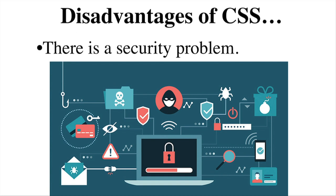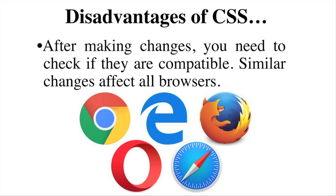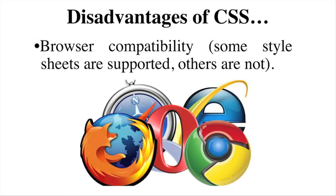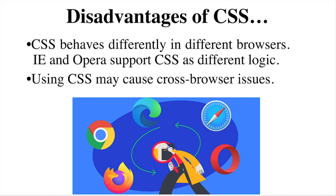There are security issues in CSS as well. After making changes, we need to check if they are compatible, and similar changes affect all browsers. The world of programming languages is complex for non-developers and beginners, and various CSS levels — CSS, CSS 2, and CSS 3 — are often quite confusing. CSS behaves differently in different browsers; for example, Internet Explorer and Opera support CSS differently. Using CSS may cause cross-browser issues.